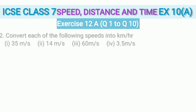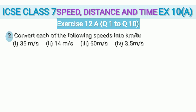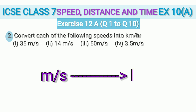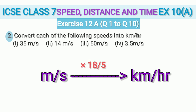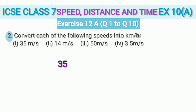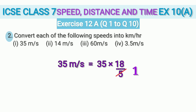In question 2 we do the reverse — we are given speed in m/s and have to convert to km/h. The conversion factor is 18/5: multiplying speed in m/s by 18/5 gives speed in km/h. For the first sub-question, 35 m/s: multiplying by 18/5, we cancel 5 and 35 using the 5 times table — 5 sevens are 35. We are left with 7 × 18 = 126 km/h.